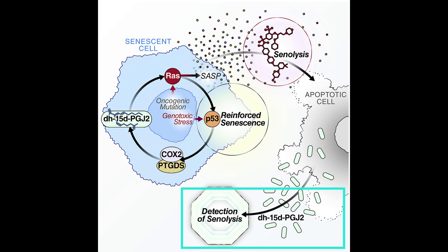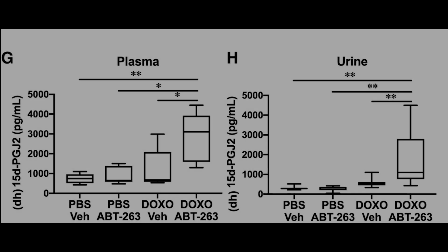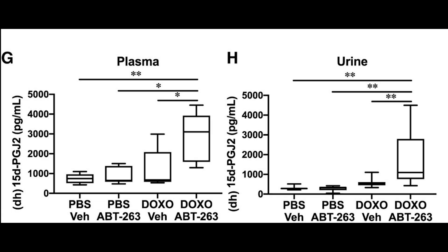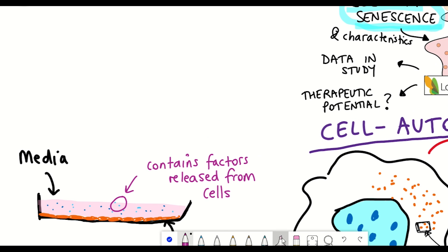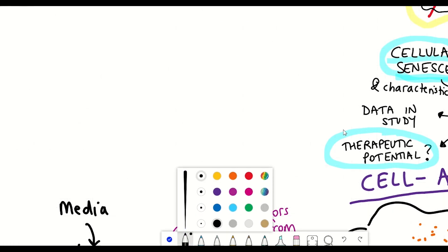And this is further supported with in vivo data from mice, whereby they also cleared the senescent cells with the same senolytic ABT263. And they found that mice that had senescent cells and treated with the senolytic compound showed increases in their plasma and urine of dihomo-15d PGJ2. And so this has caused a lot of interest, given that urine and plasma are much less invasive than other approaches to be able to detect the presence of senescent cells.